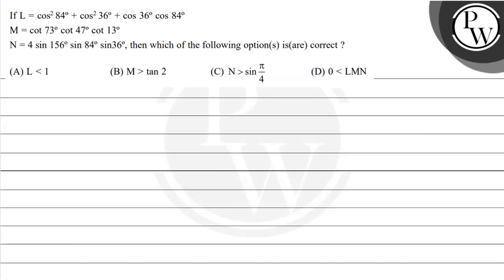Hello. So let's see this question. If L is equal to cos squared 84 degrees plus cos squared 36 degrees plus cos of 36 degrees times cos of 84 degrees, and M is equal to cot of 73 degrees times cot of 47 degrees times cot of 13 degrees, and N is equal to 4 times sine of 156 degrees times sine of 84 degrees times sine of 36 degrees. Then which of the following options is correct?